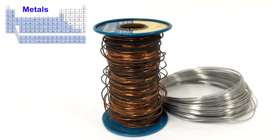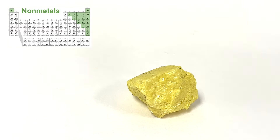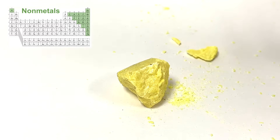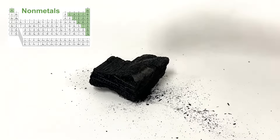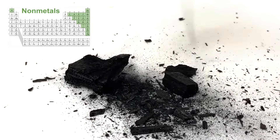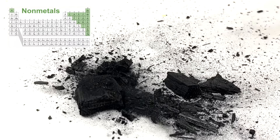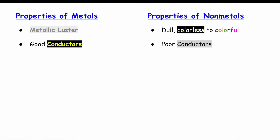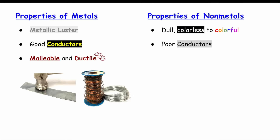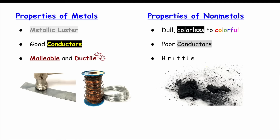In addition to being malleable, metals are also very ductile, which means they can be drawn into thin wires — very useful for everyday electronics. Now if we try to hit a non-metal with a hammer, as you can see, it easily breaks into many pieces. This means that they're very brittle. So metals are malleable and ductile, whereas non-metals are very brittle — they break when hit with a hammer.